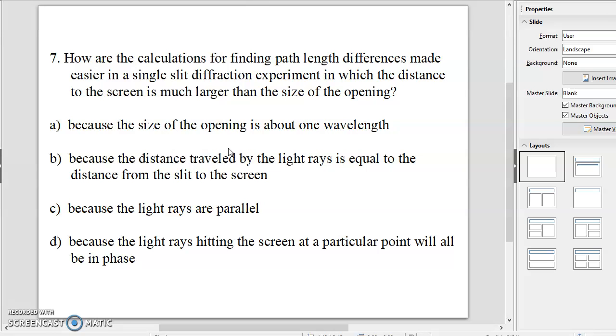Number seven. How are the calculations for finding path length differences made easier in a single slit diffraction experiment in which the distance to the screen is much larger than the size of the opening? And the answer there is because the parallel light rays are parallel. In other words, you use theta, you don't have to work the sine of theta.